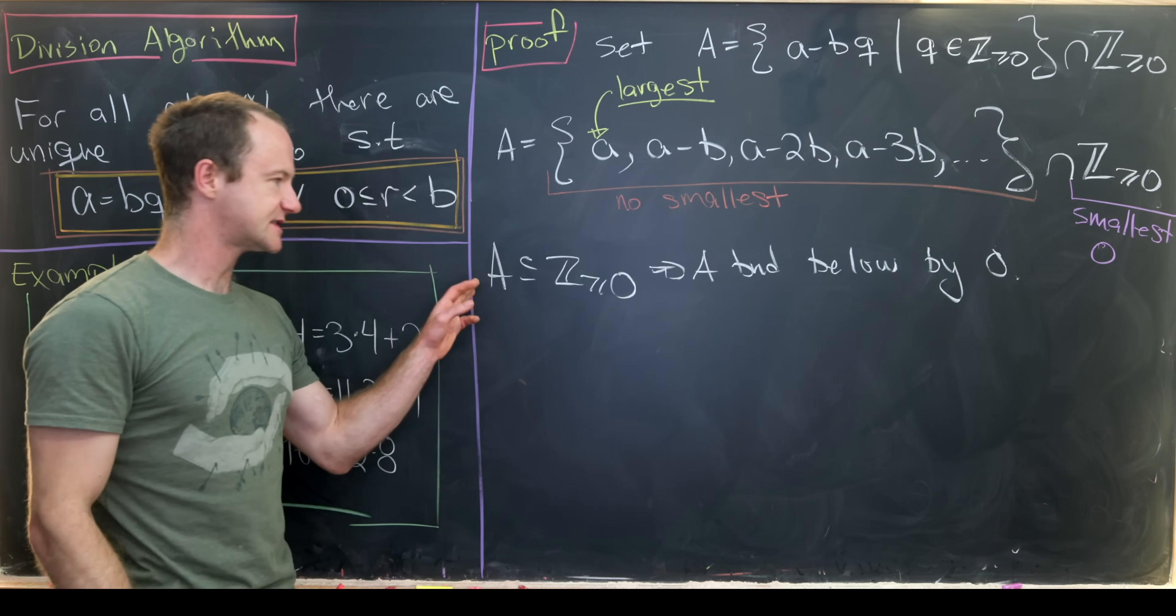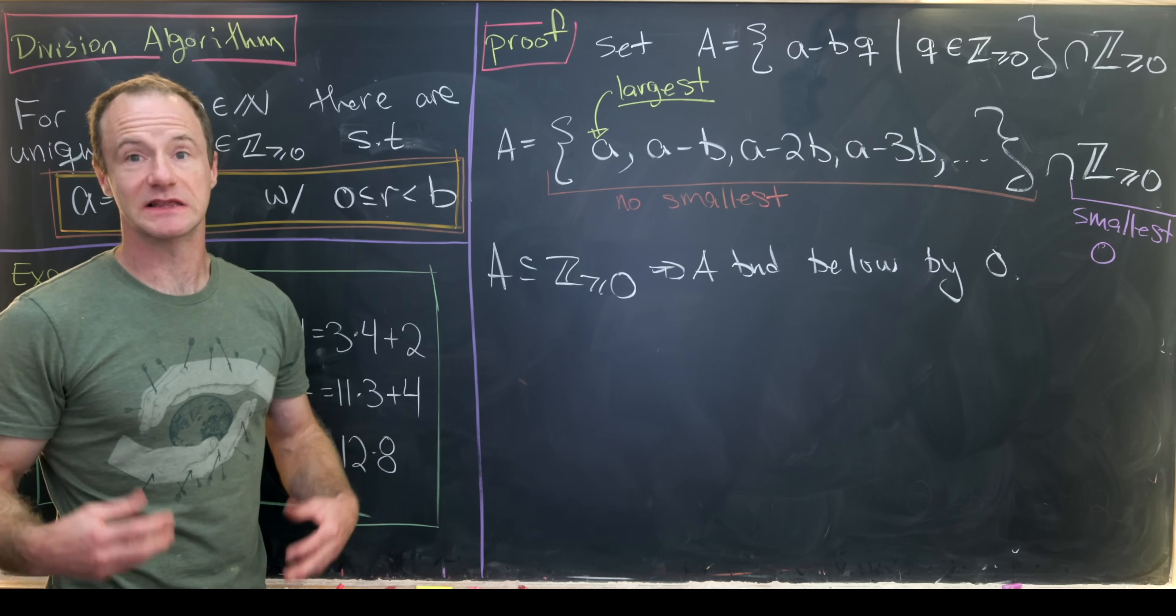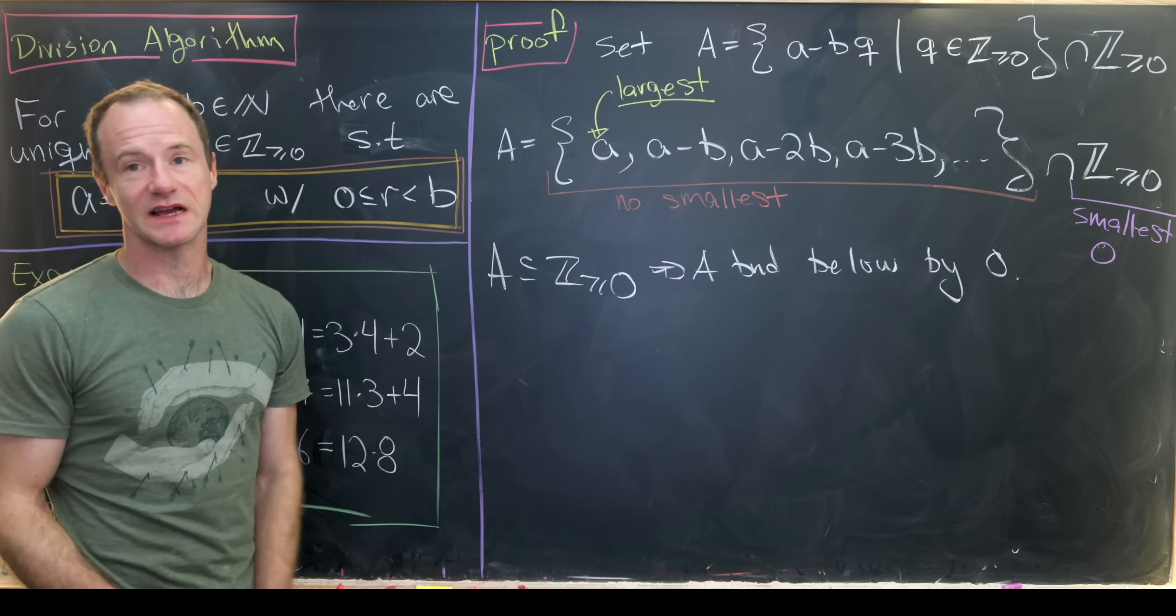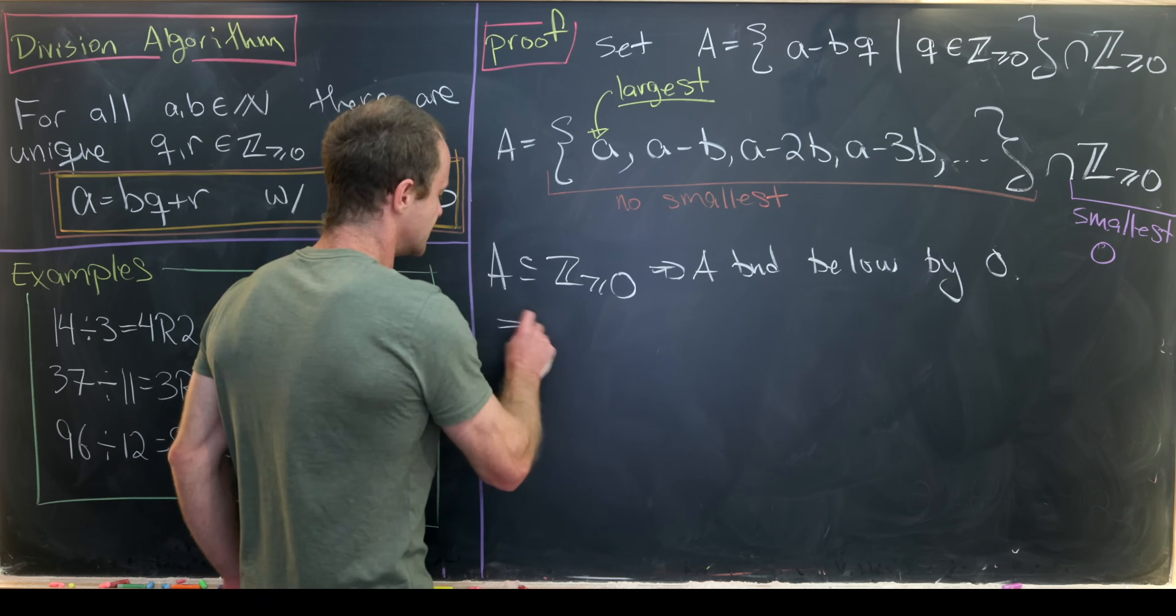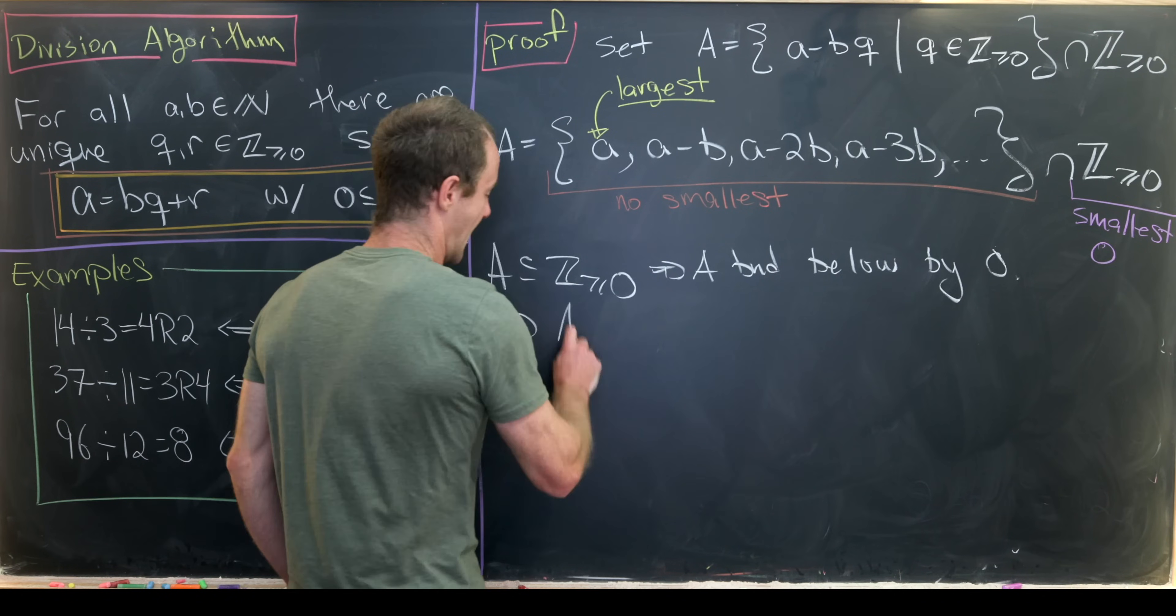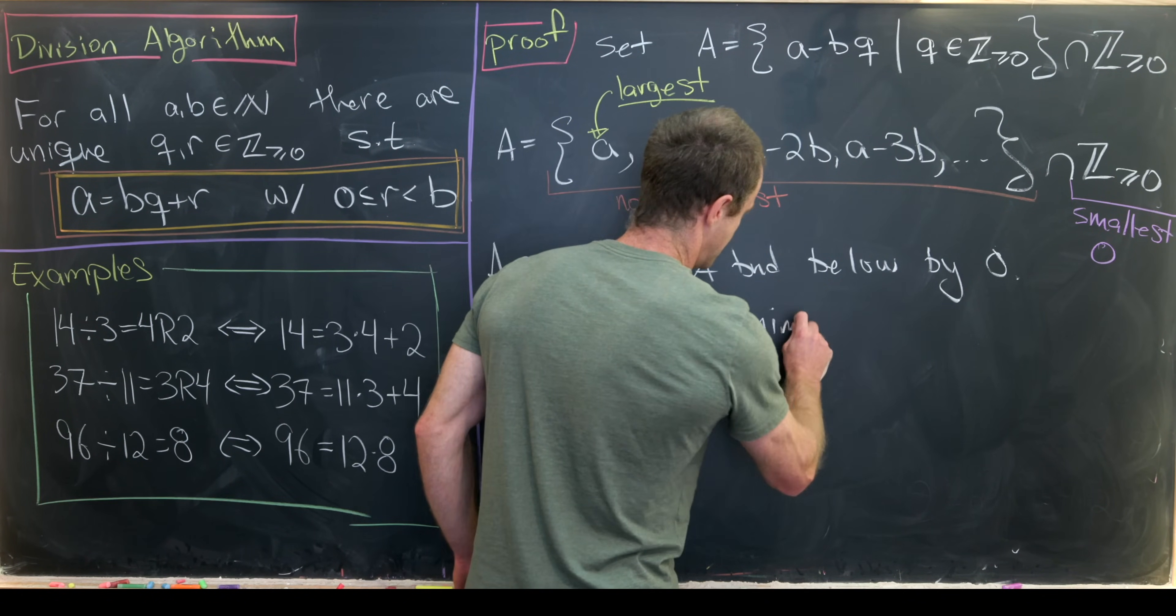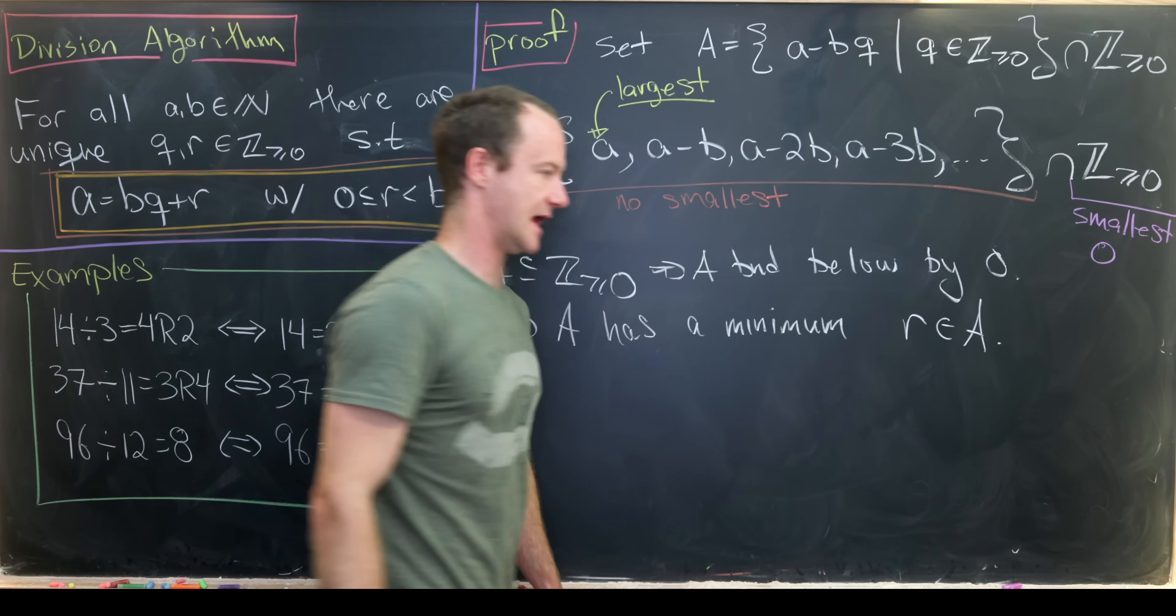But then any subset of integers which is bounded below has a least element. That's known as the Archimedean principle, or maybe it's a slight generalization of the Archimedean principle, but I think that's kind of okay. So let's say that A has a minimum. We'll call it r, which is in A. Great.